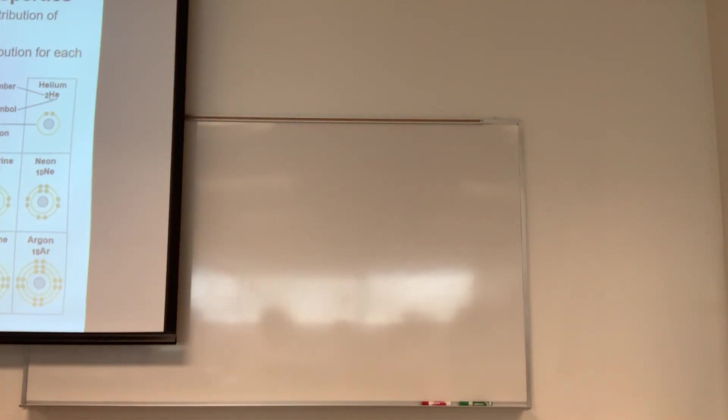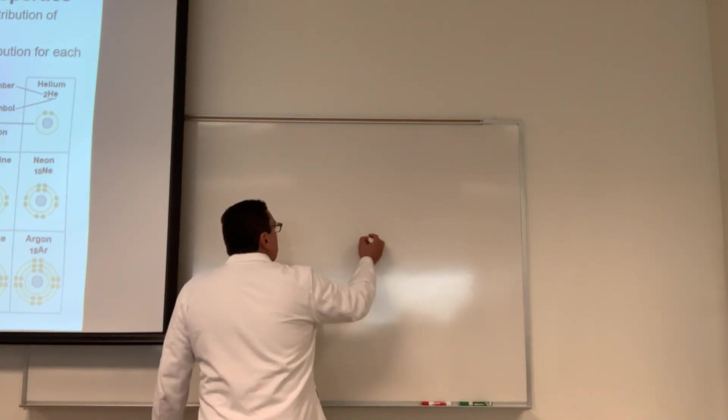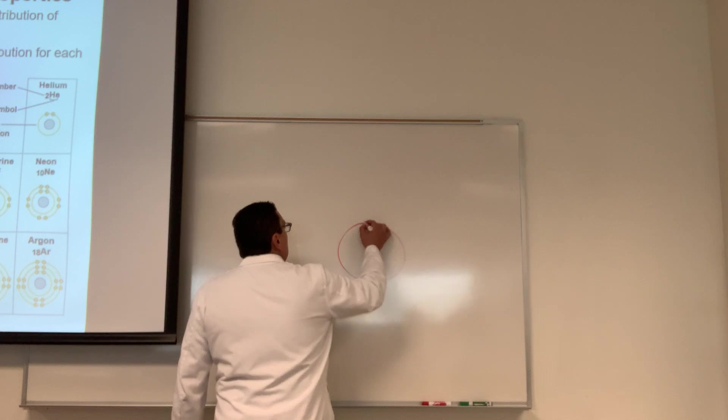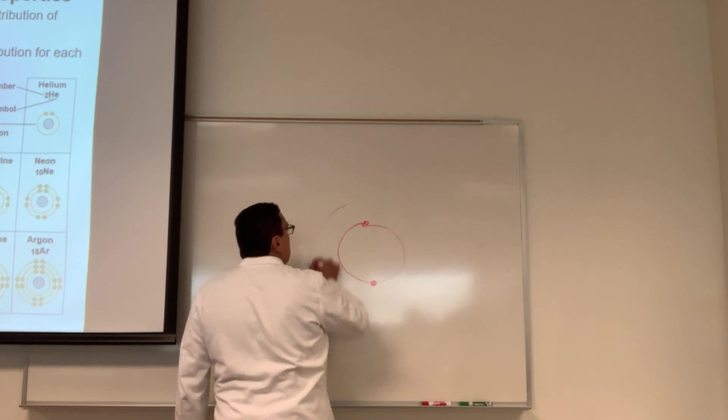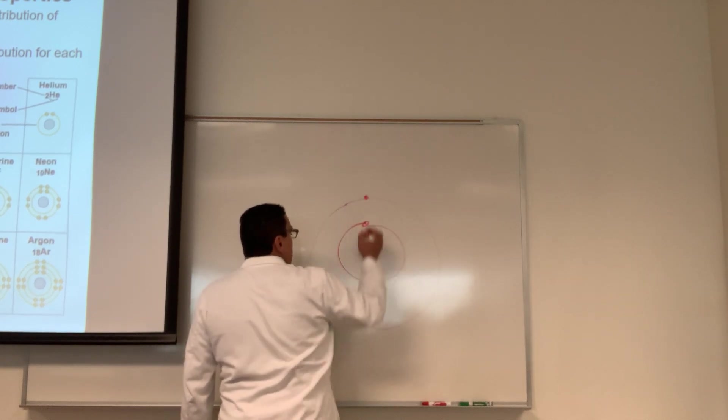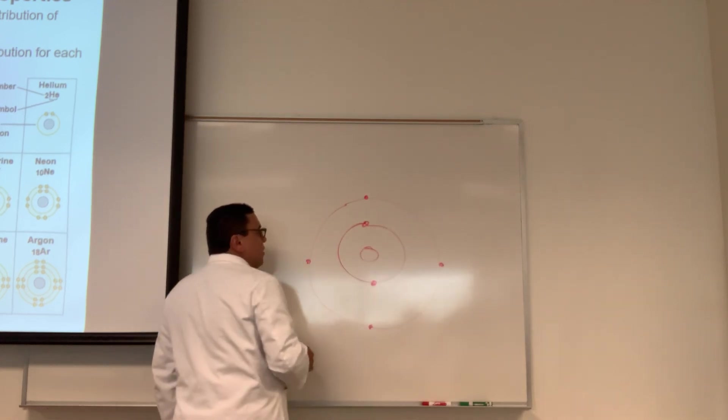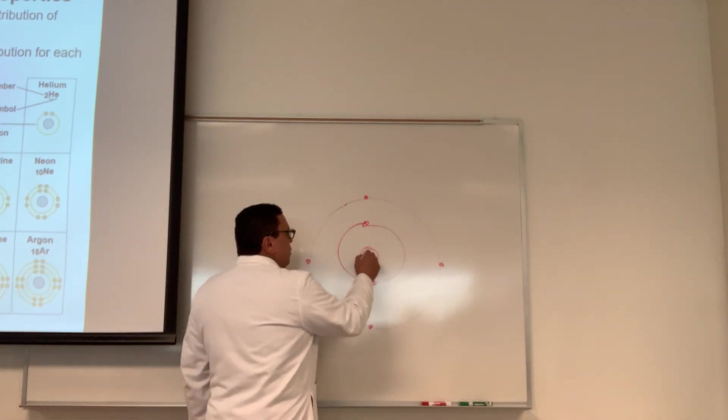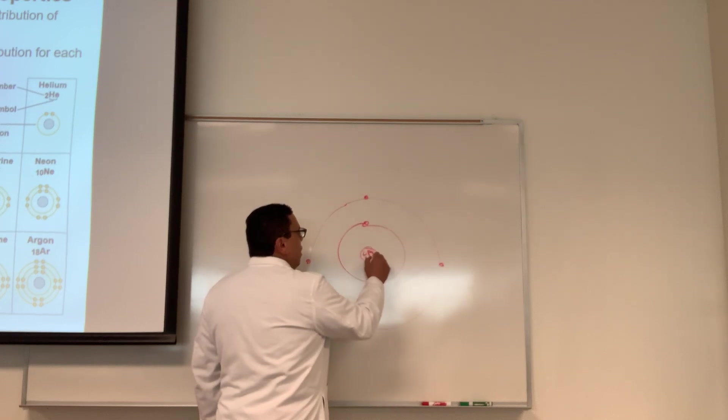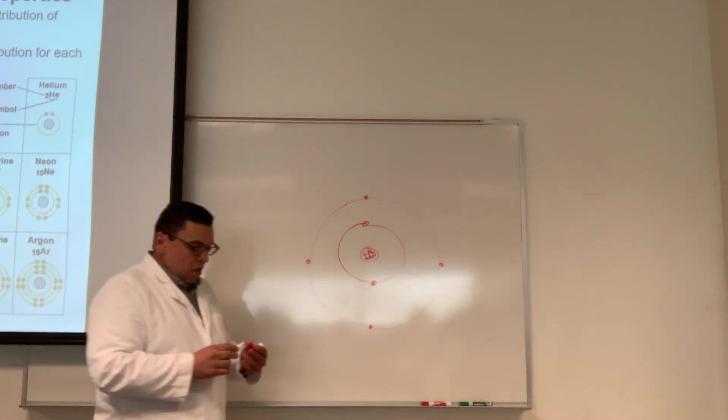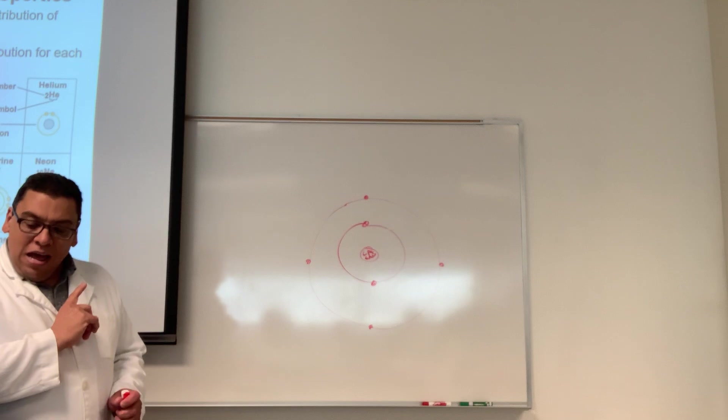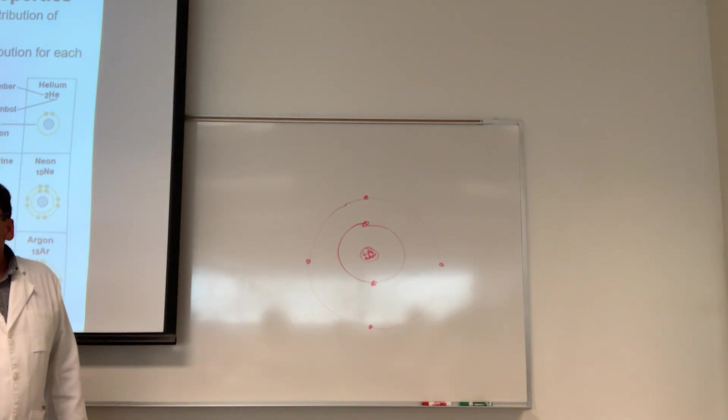Carbon has six electrons: two in the first energy shell and four in the second. Here is the atomic nucleus with six protons and six neutrons. The way it is right now, carbon is disobeying the octet rule.